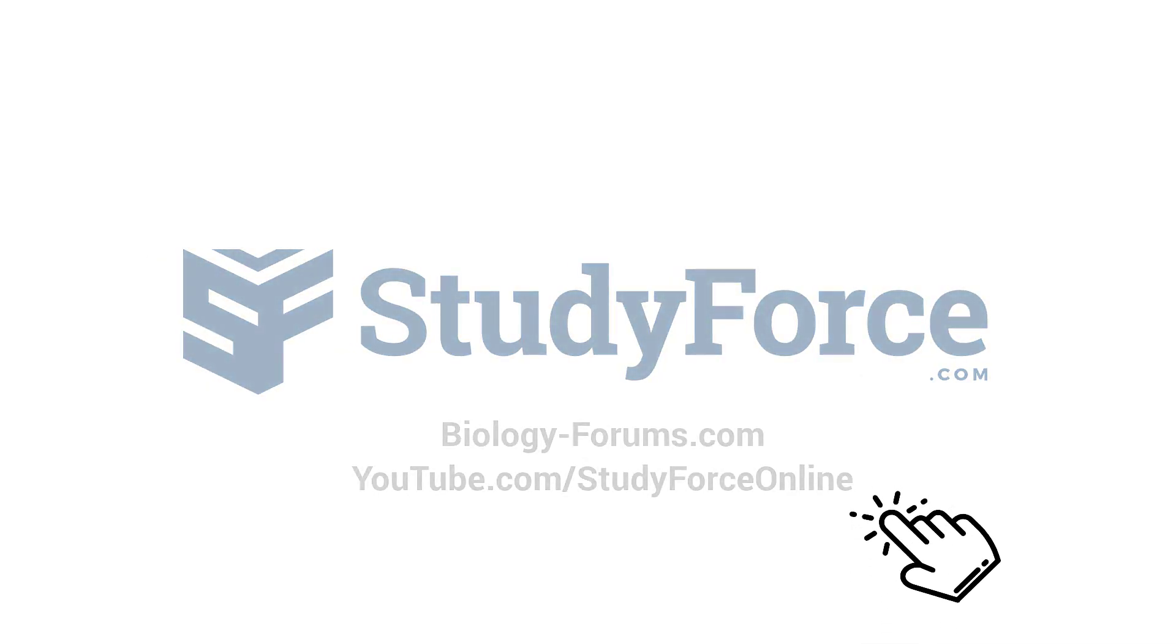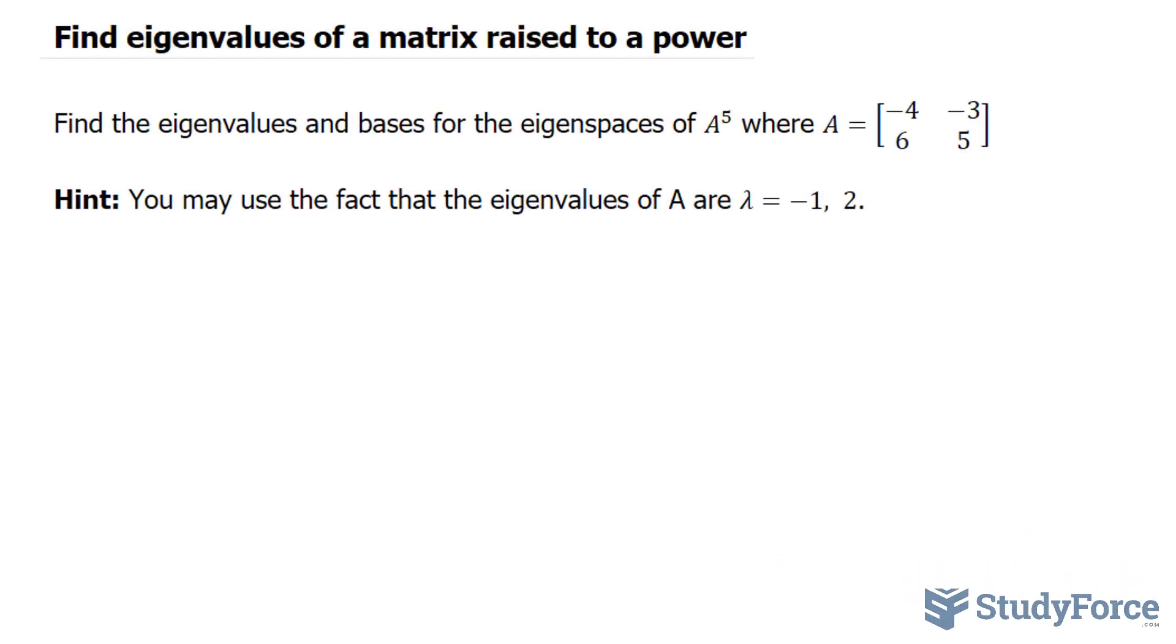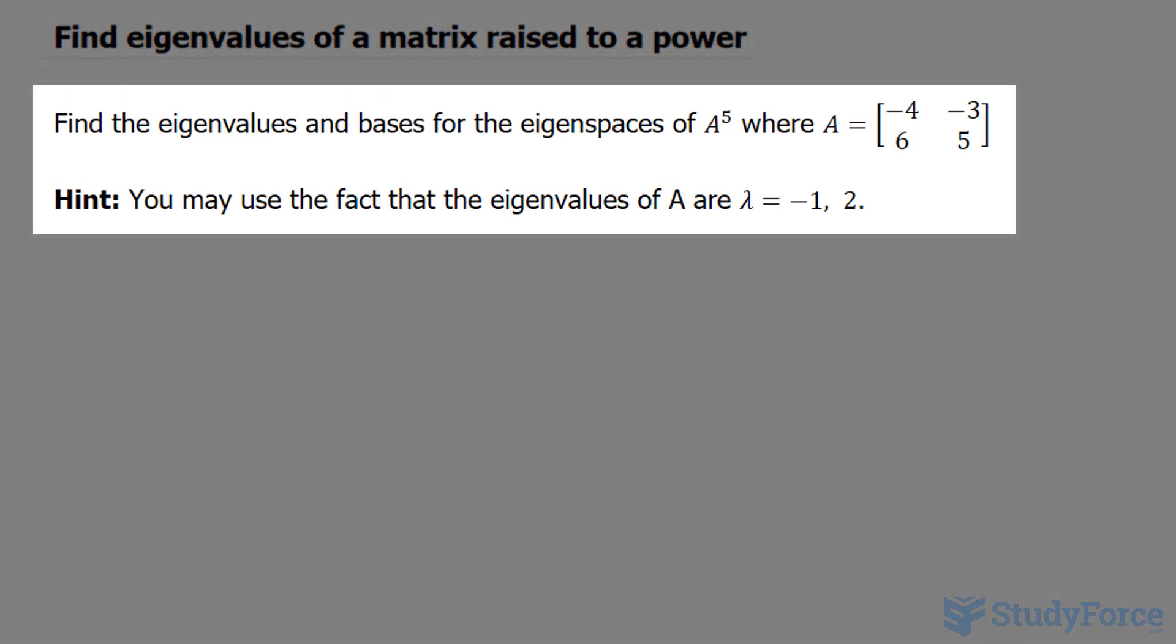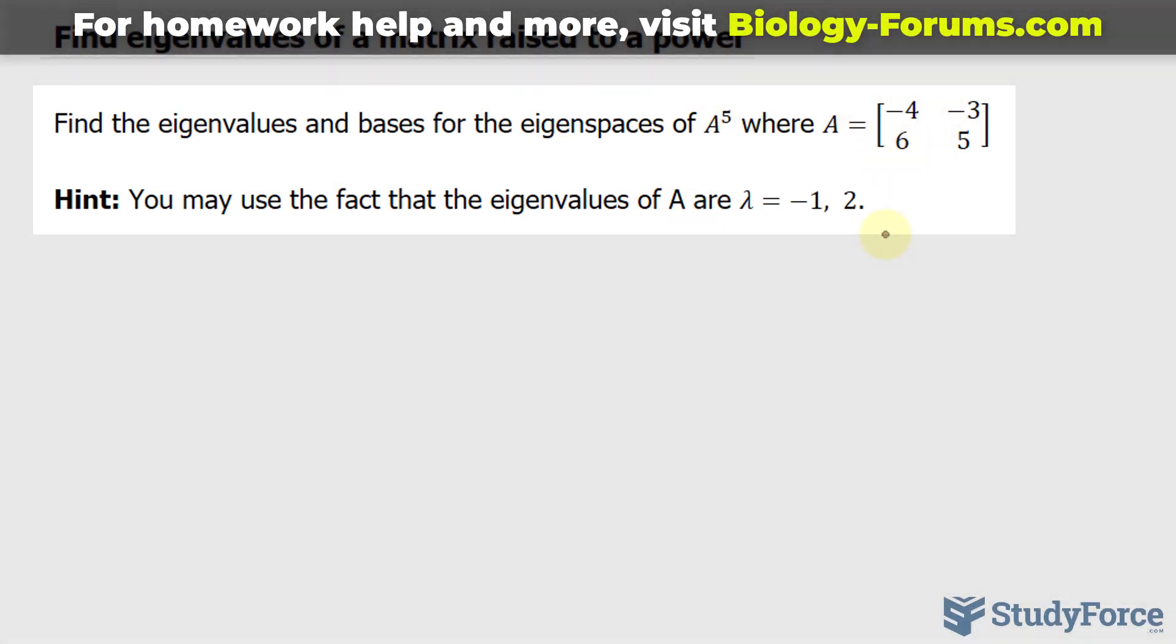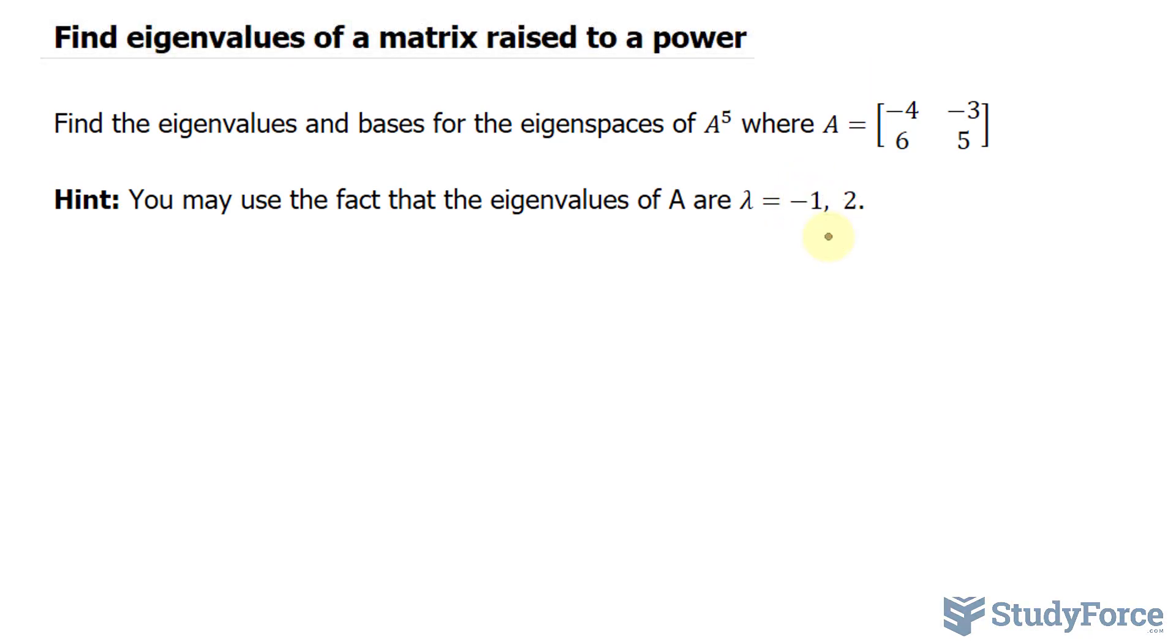In this lesson, we'll discuss how to find the eigenvalues of a matrix raised to a power. The question reads: find the eigenvalues and bases for the eigenspace of the matrix A raised to the power of 5, where it is a 2 by 2 matrix. The hint states you may use the fact that the eigenvalues of A are negative 1 and 2.